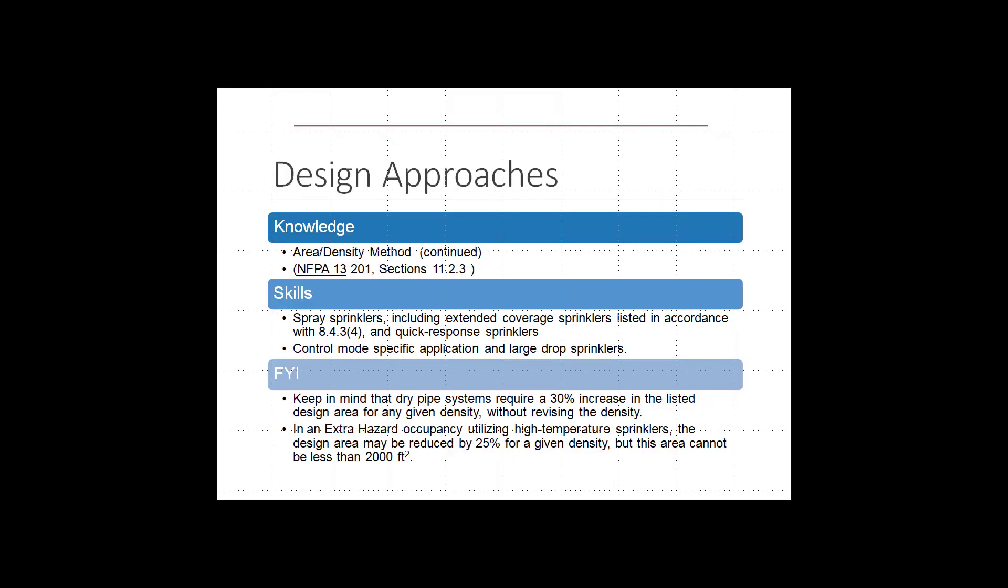In an extra hazard occupancy utilizing high temperature sprinklers, the design area may be reduced by 25% for a given density, but this area cannot be less than 2,000 square feet.